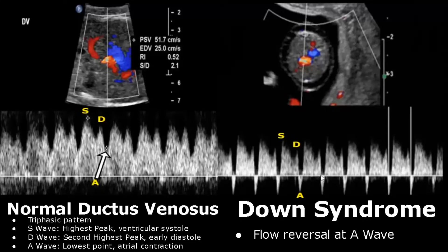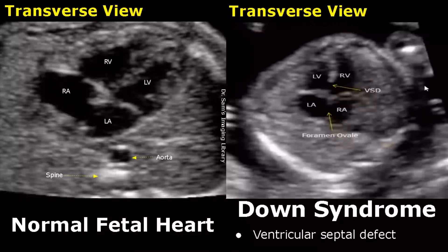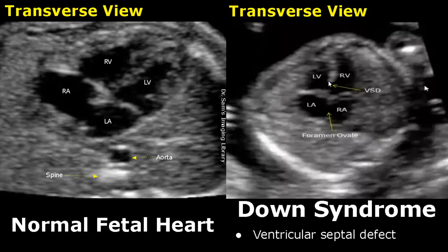A ventricular septal defect is a discontinuity in the interventricular septum — this is the defect. It is also a soft marker for Down syndrome.